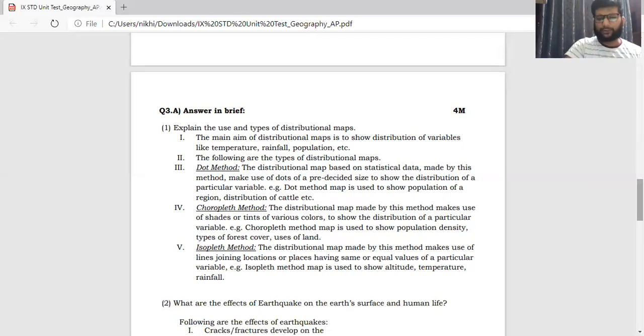Isopleth method. The distribution map made by this method makes use of lines which are joining the locations or places having the same or equal values of a particular variable. For example, isopleth method map is utilized to show altitudes where you have common altitudes. Then you can utilize it for temperatures and that also goes for rainfall. Children, it's a detailed answer but a very simple answer. And if you are covering these points, trust me, you can score full marks. Please ensure to stick to the actual language.